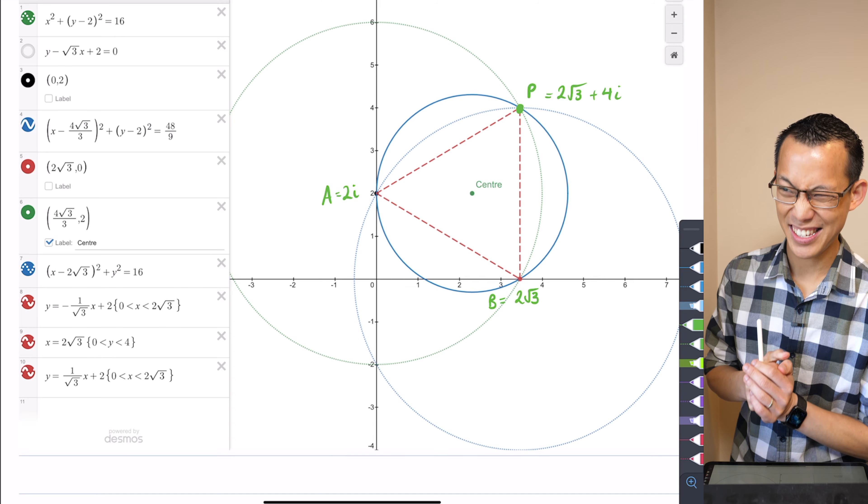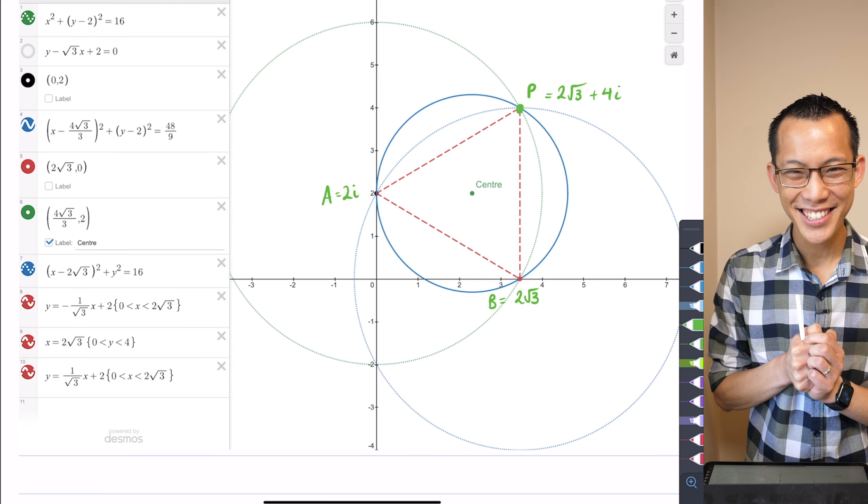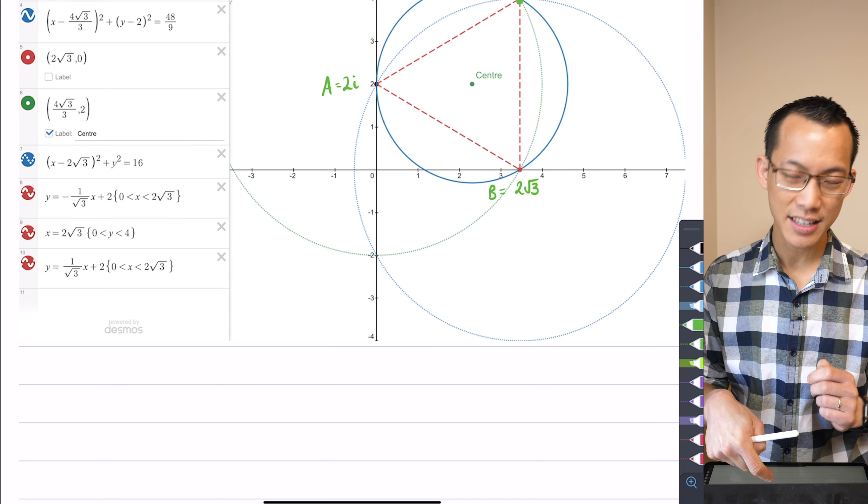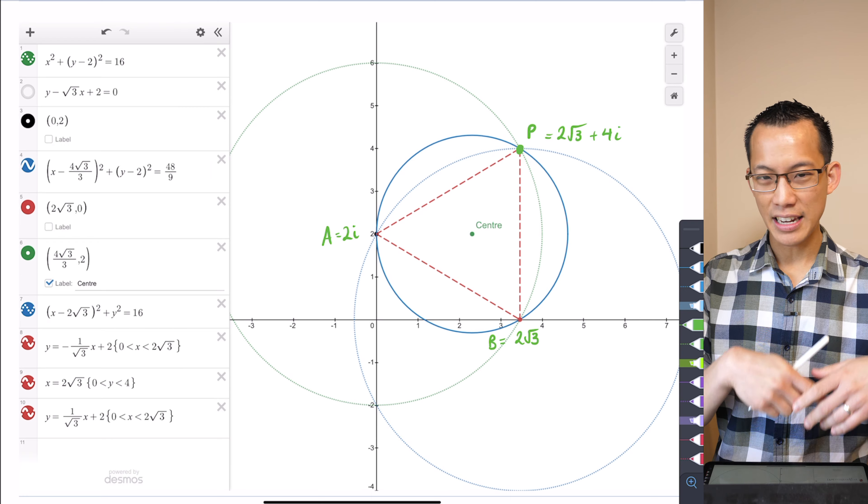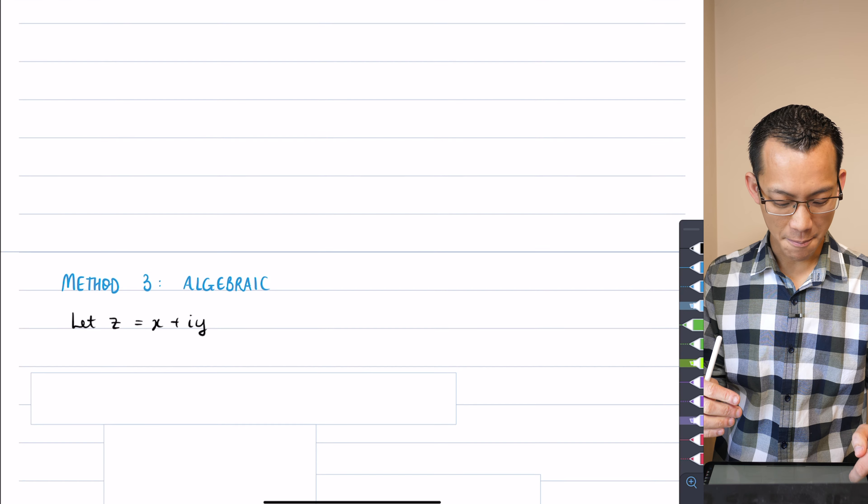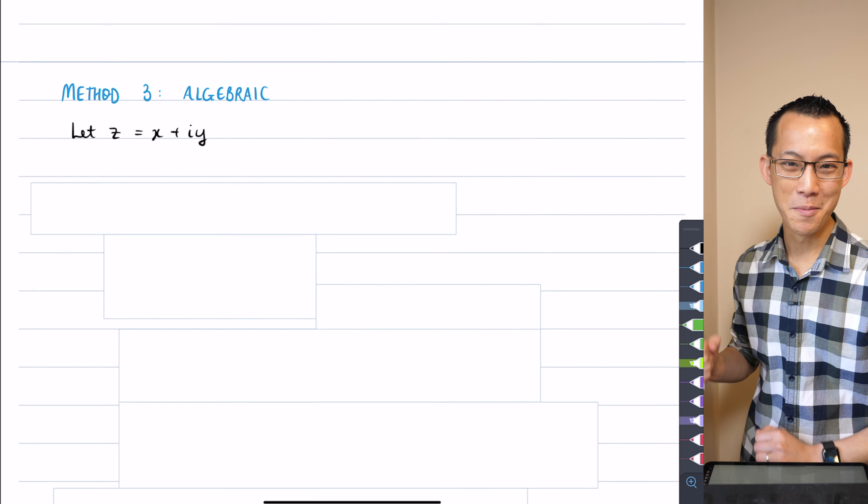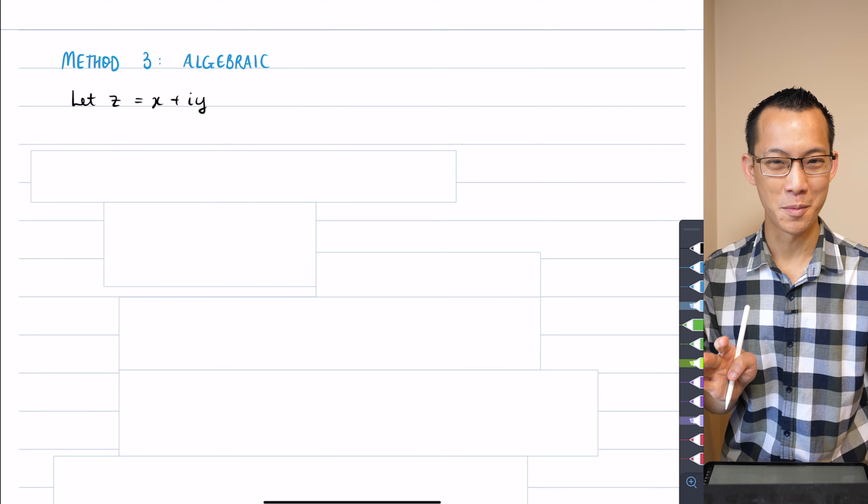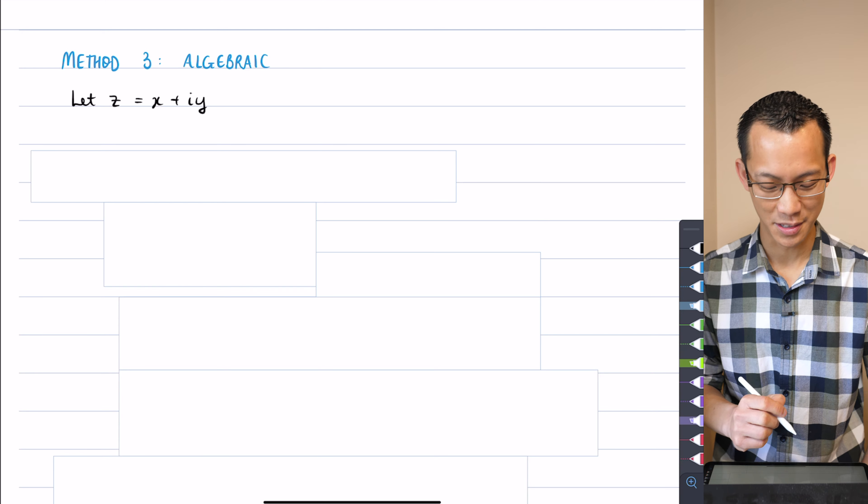Here's my final one. In some ways, it's the worst solution because it's the longest and most awkward, but it's important to know that if you don't like any of this other reasoning, there is a way to bash your way through algebraically.